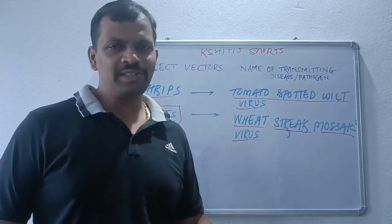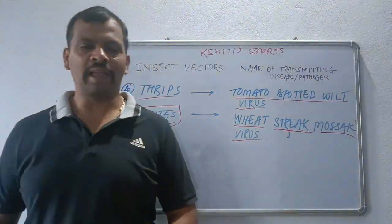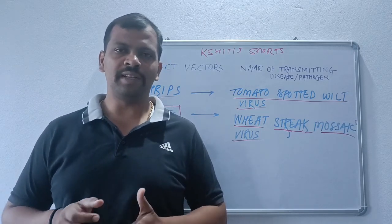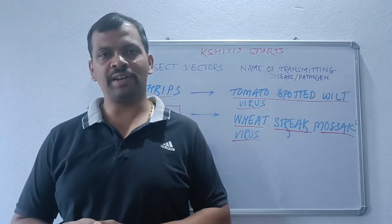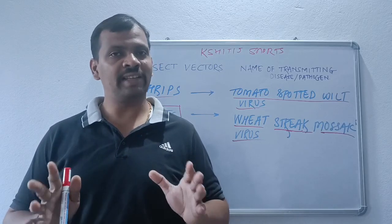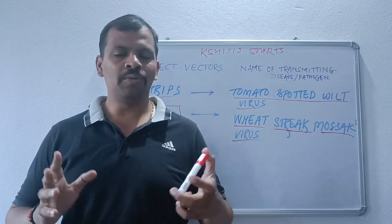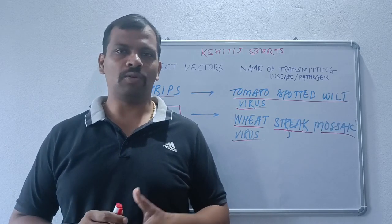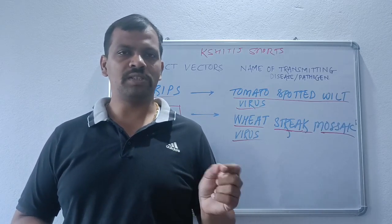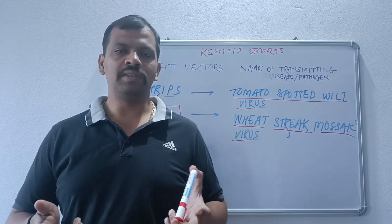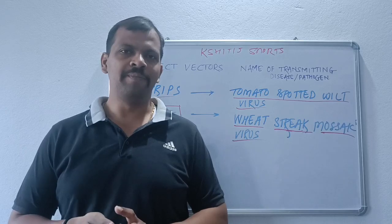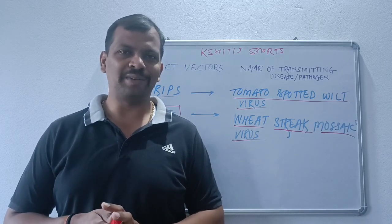Thank you all for your tremendous response to the Triple Seven Test Series conducted by Shithish Career, specially designed for Agriculture Field Officers and totally exam-oriented. If you want to join the test series, the contact number is given in the description box. Just send a message on WhatsApp or Telegram and we will send you the procedure to enroll. Thanks for watching this video — have a nice day!